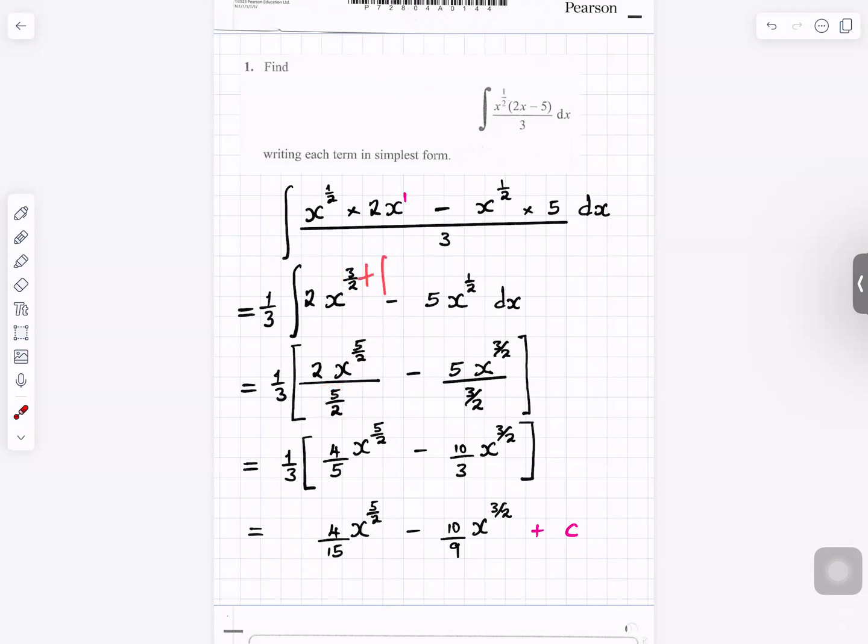Add 1 to the power and divide by the power. Add 1 to the power half plus 1 gives you 3 over 2 and divide by the power. After that, put that in your calculator to get 4 over 5.